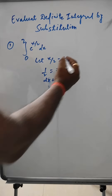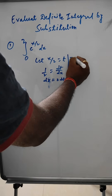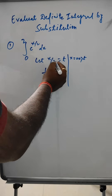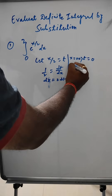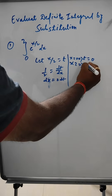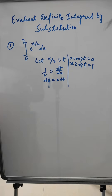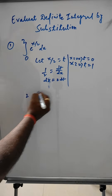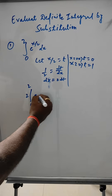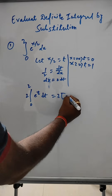Now we change the limits. When x = 0, t = 0/2 = 0. When x = 2, t = 2/2 = 1. So the integral becomes 2 times the integral from 0 to 1 of e^t dt.